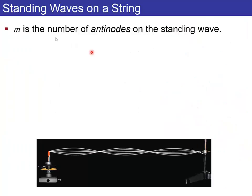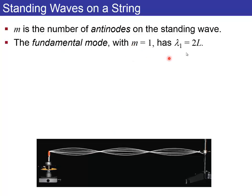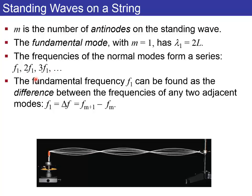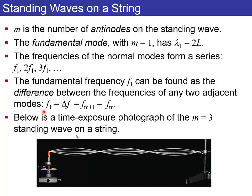So one way of counting modes is to count the antinodes. The fundamental mode has, which just has one antinode in the middle, has wavelength 2L. And the frequencies form a series, F1, F2, F3, et cetera. So if you have two adjacent modes, you can always subtract them and figure out what the fundamental frequency is. And here's a little time exposure showing a standing wave on a string.